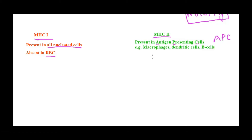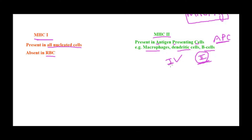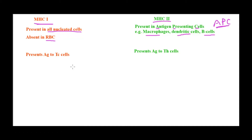Antigen-presenting cells are cells that present antigens to T cells for a further immune response. Examples include macrophages and dendritic cells. Now, would antigen-presenting cells also have MHC class 1? Of course — antigen-presenting cells are nucleated, so they definitely have MHC class 1. In addition to that, they also have MHC class 2. So class 1 is on nucleated cells, and class 2 is on APCs.